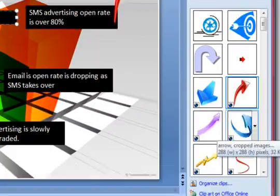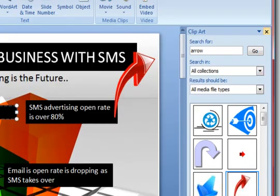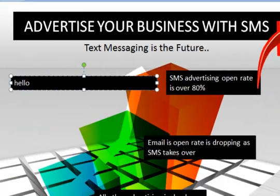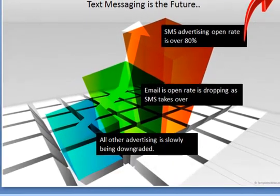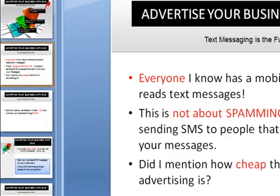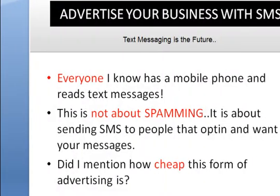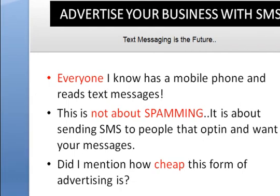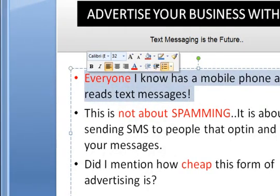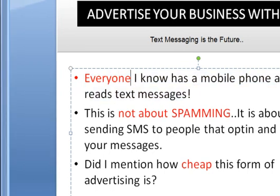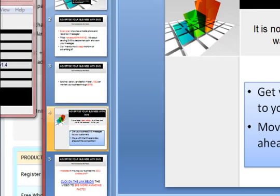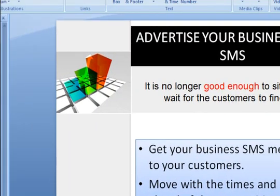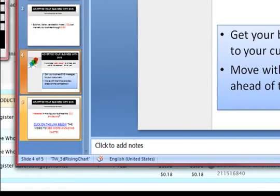To get the arrow, I went to Insert, then Clip Art, and found the arrow in the list. I changed the slide from a plain PowerPoint slide to this. On the next slide, I selected the dull grey writing and made it all black, then made some words red. The slides came with the template — I just filled them in.